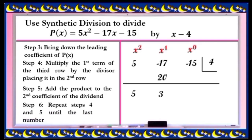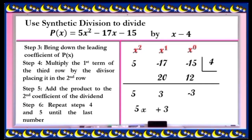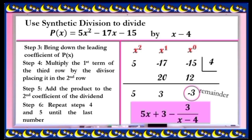Step 6: repeat steps 4 and 5 up until the last column. Multiply 3 by 4; the result is 12. Then add: negative 15 plus 12 equals negative 3. Our dividend is in the second degree while the divisor is in the first degree, so our quotient must be in the first degree — 2 minus 1 based on their exponents. So we have 5x + 3, and the result in the last column is the remainder. Therefore, the final answer is 5x + 3 - 3/(x - 4).